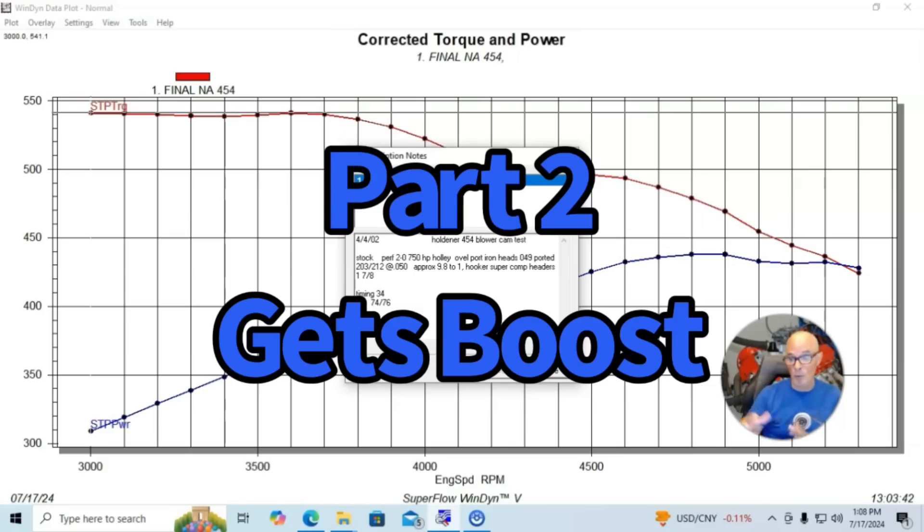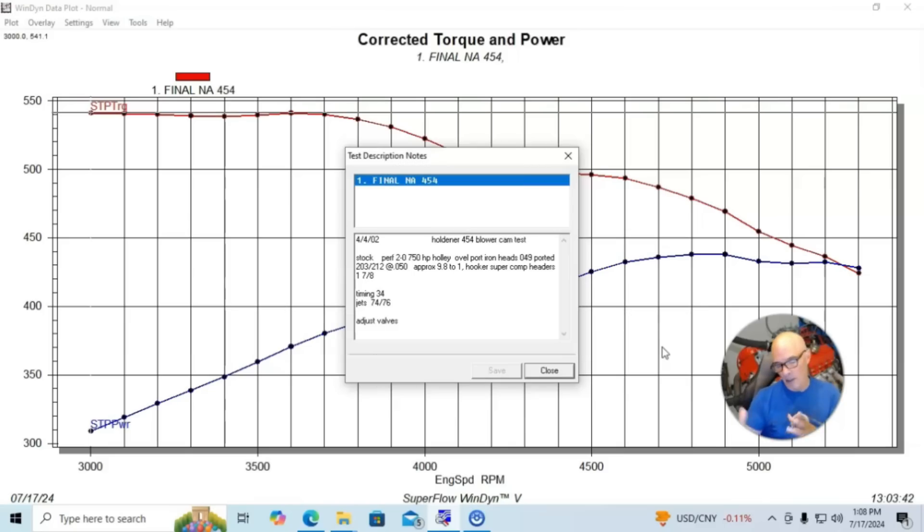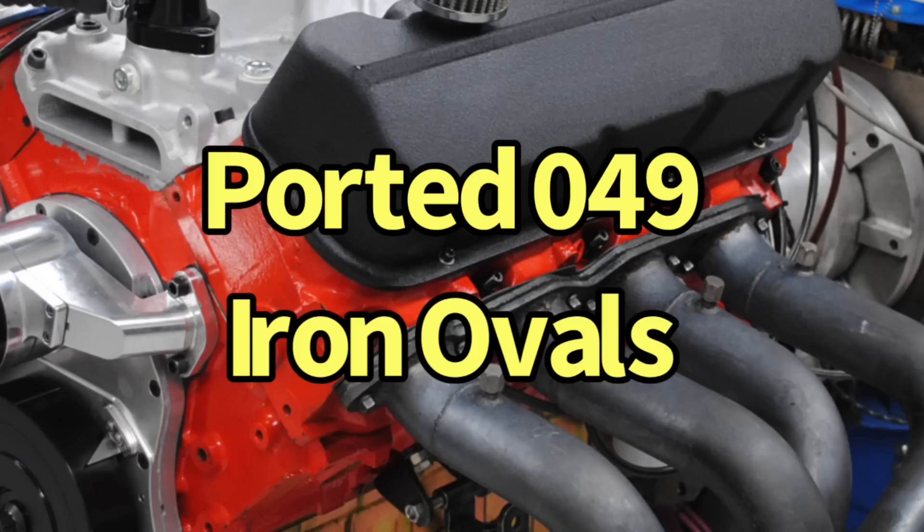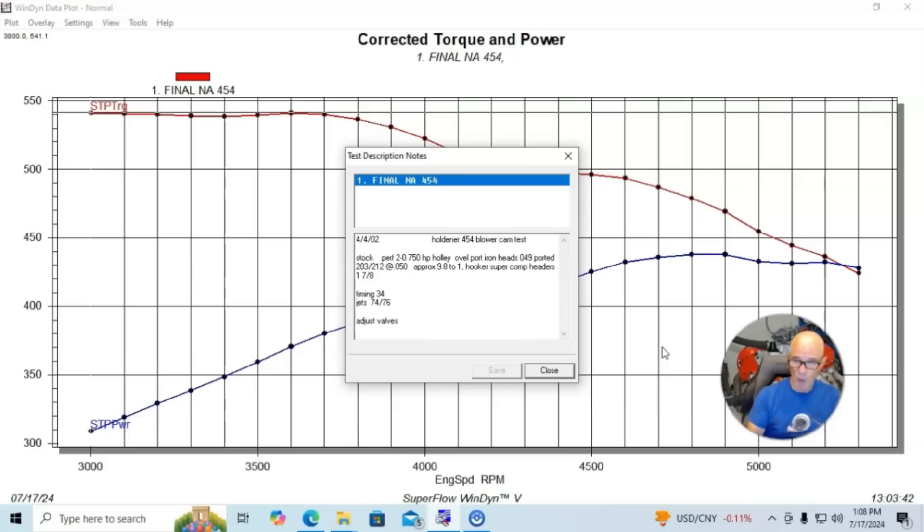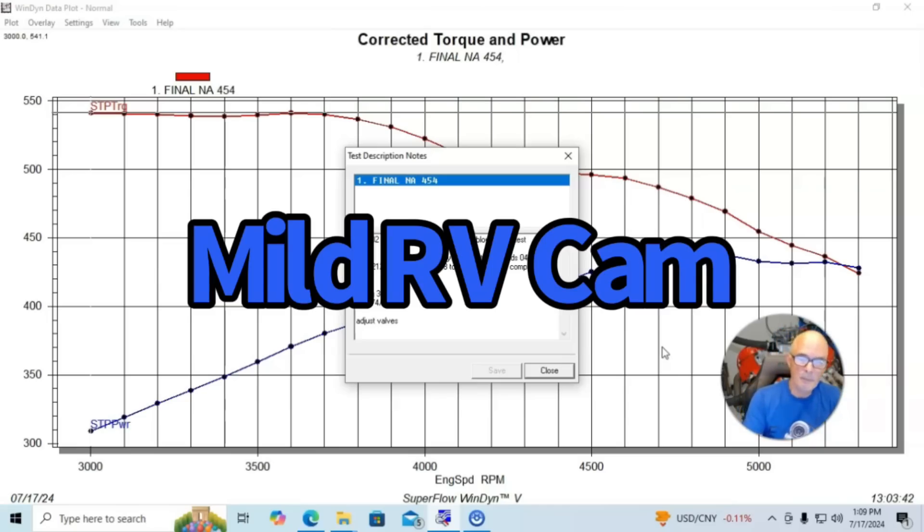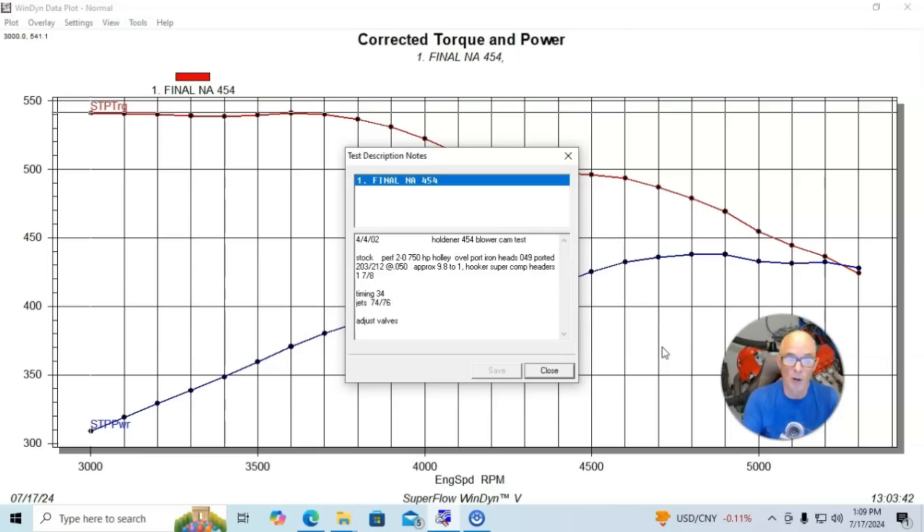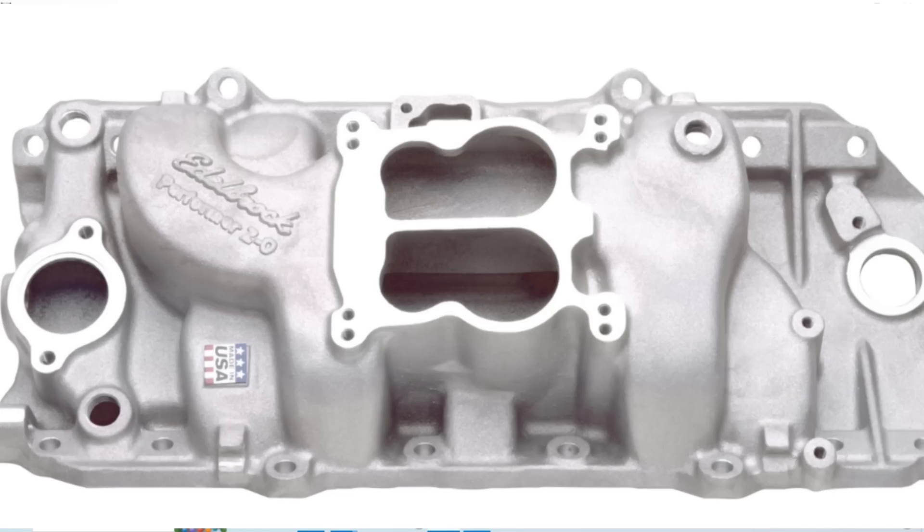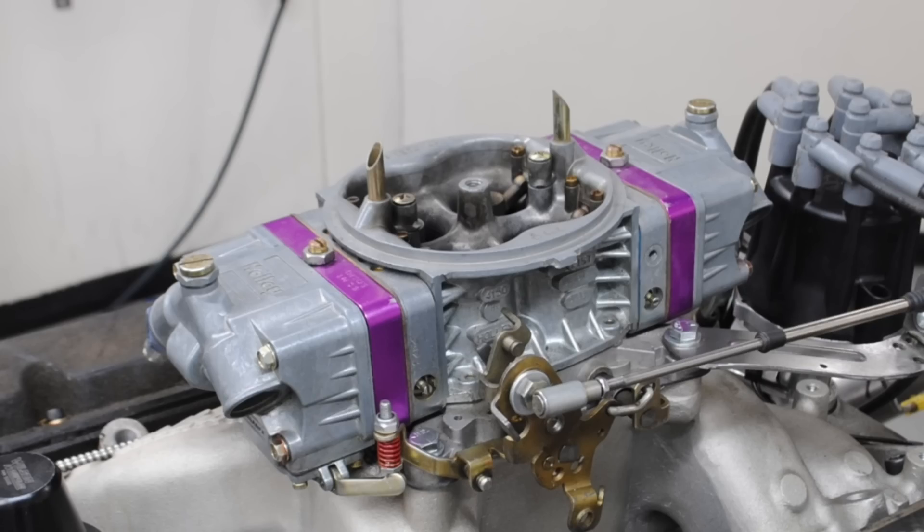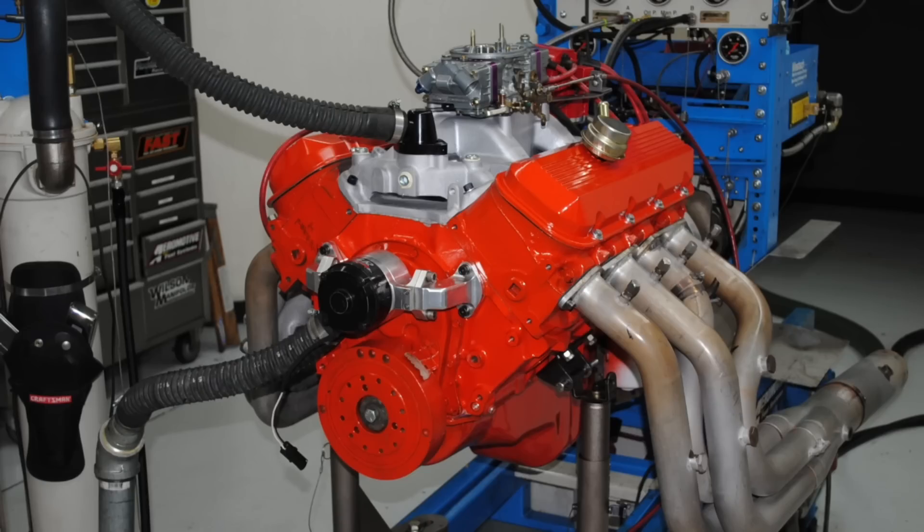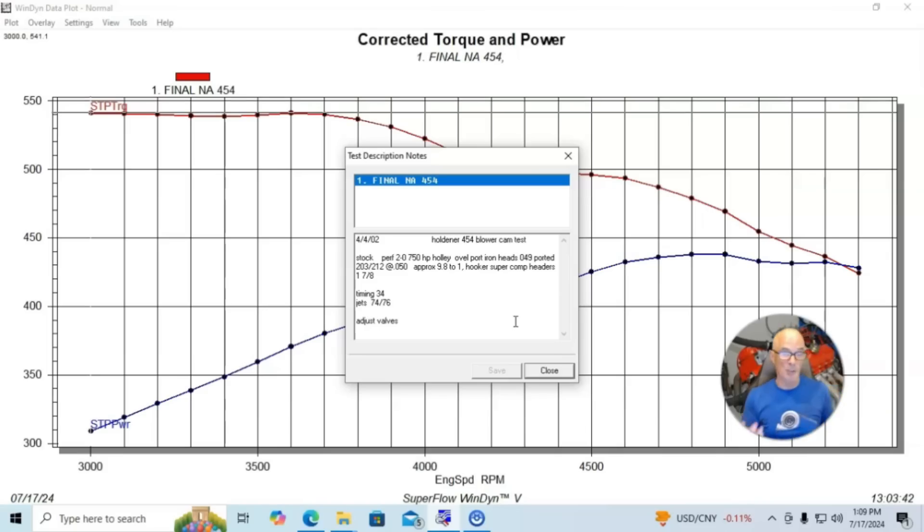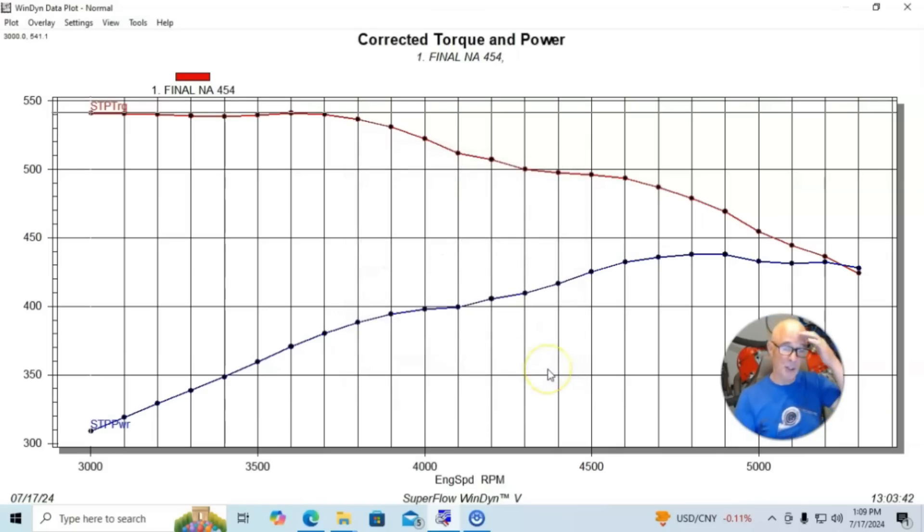Having a forged piston in it allowed us later on to run this motor with a blower. We put a set of ported 049 oval port heads on it. Because we were using this as a daily driver slash towing vehicle, we put a small camshaft in it. It was a Crane cam, a sub-500 lift, 203, 212 at 50, and 112 degree lobe separation angle.